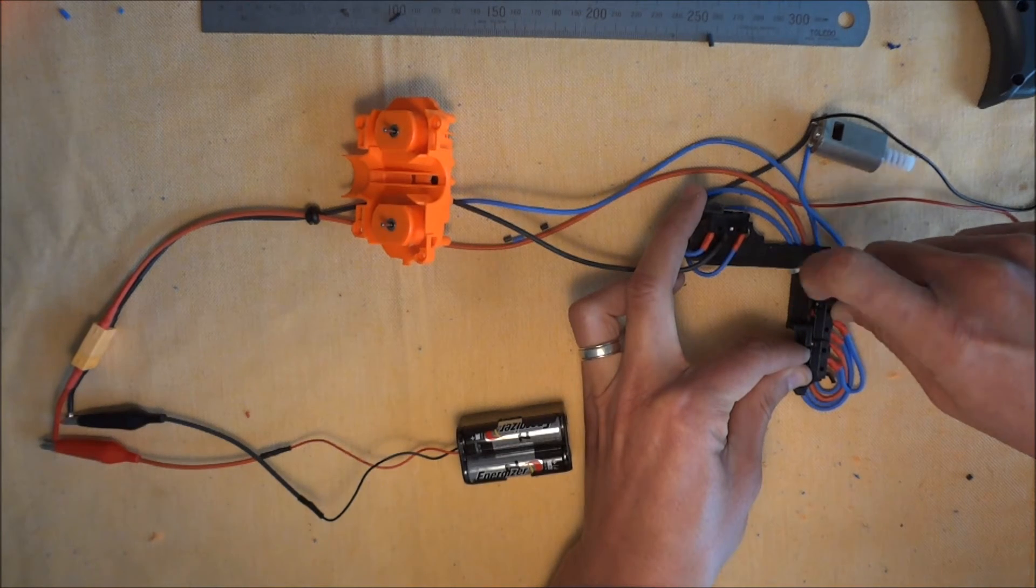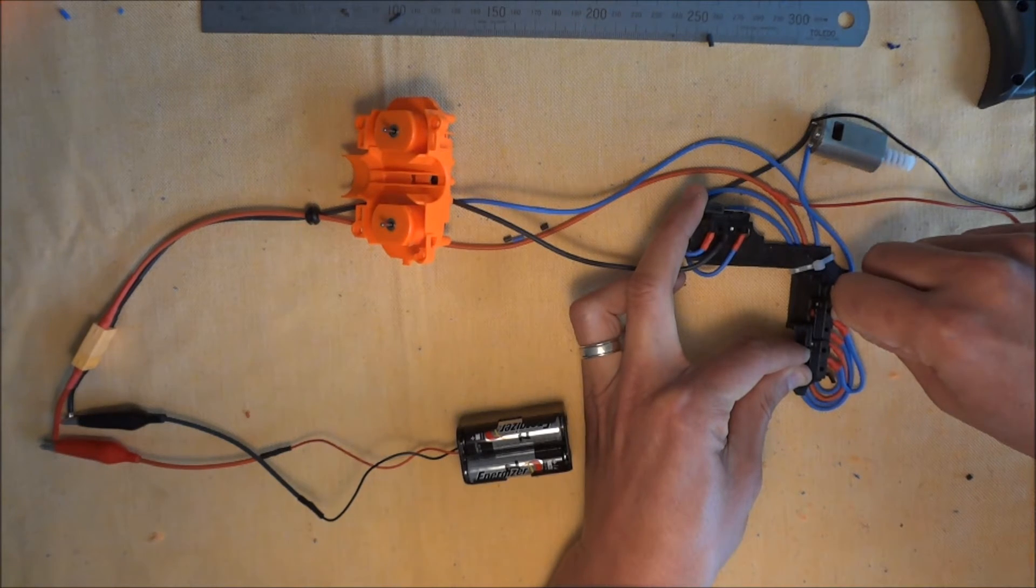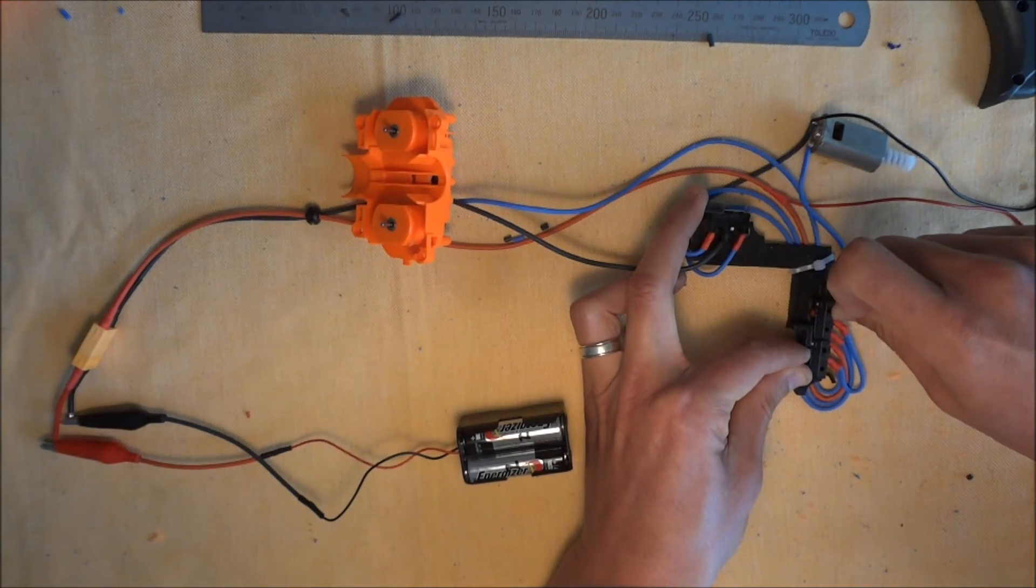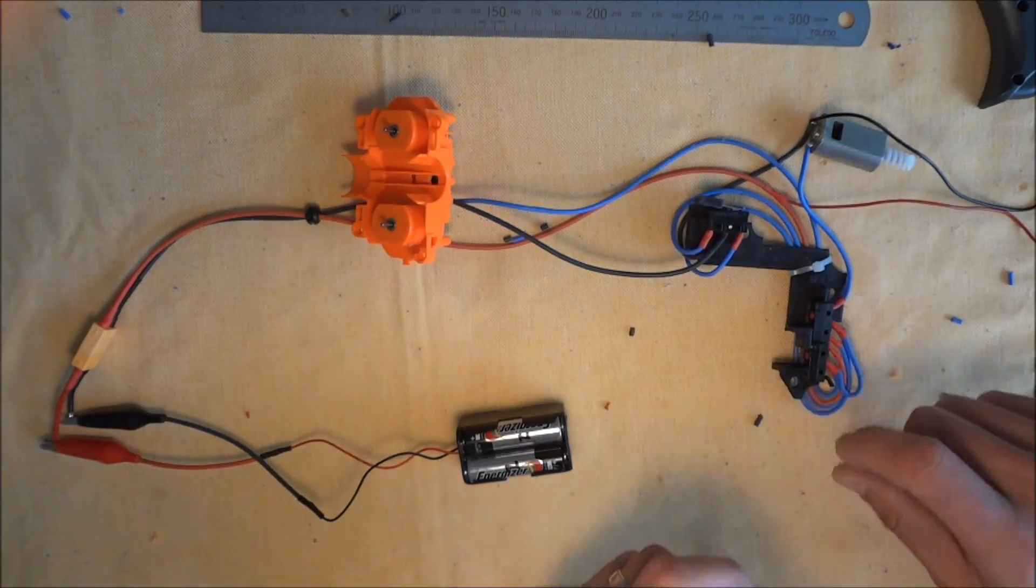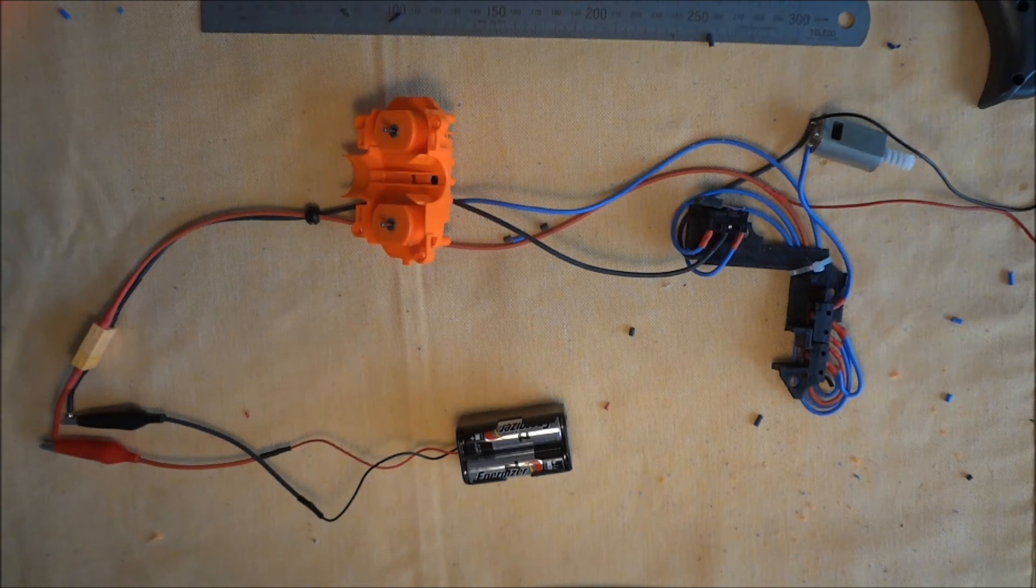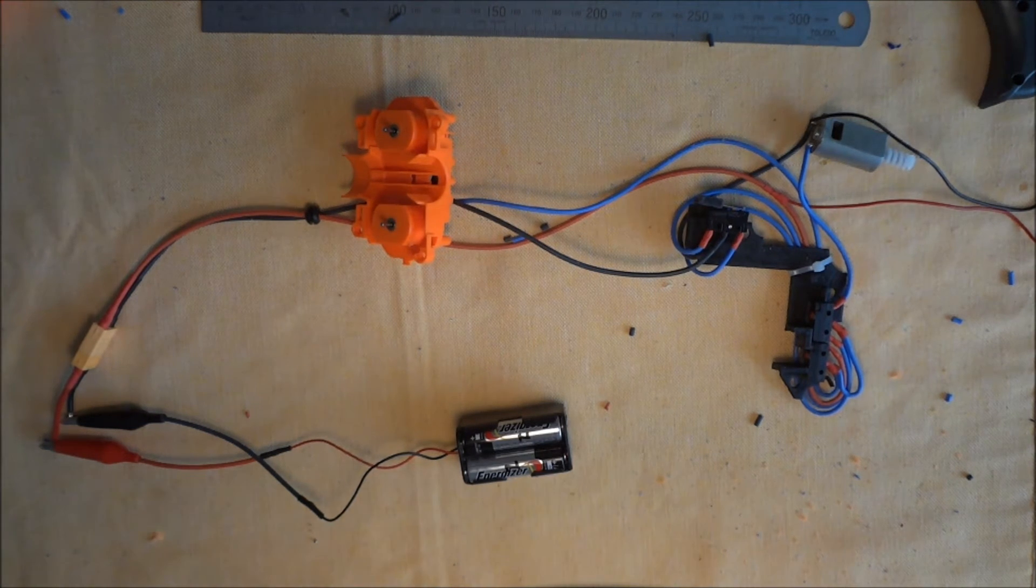So this all happens very quickly, of course, but we're using double A's and my fingers as a tripping mechanism. So that's basically how the cycle works. This loom and motor kit seems to be working quite fine, so we'll be able to install that.